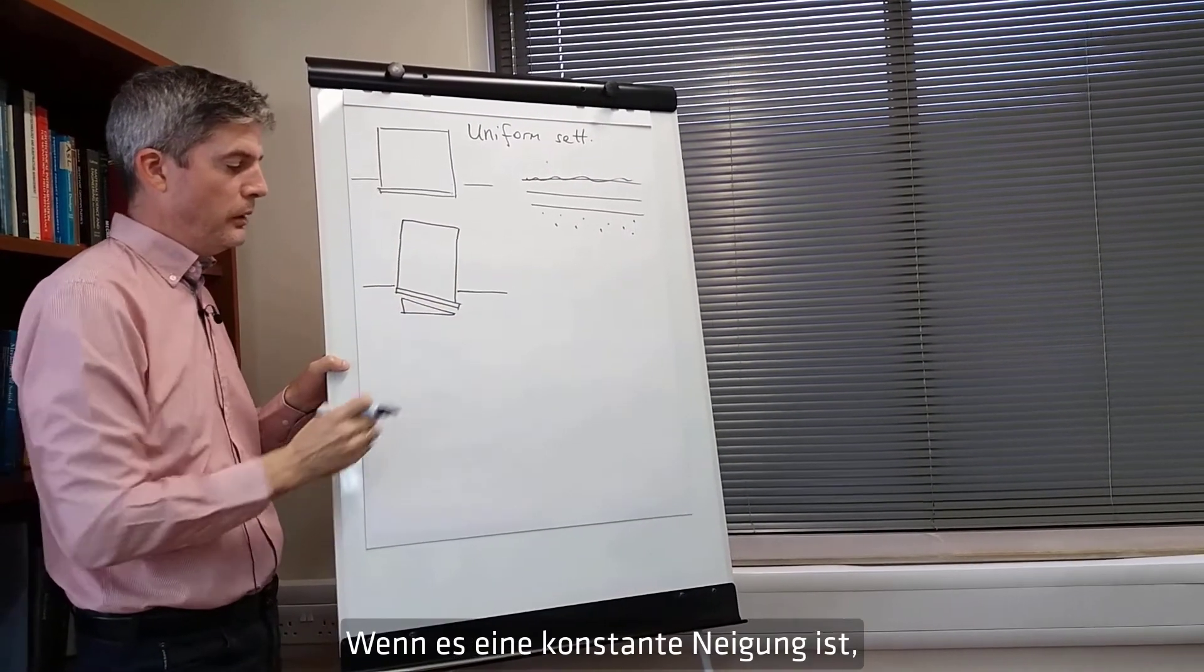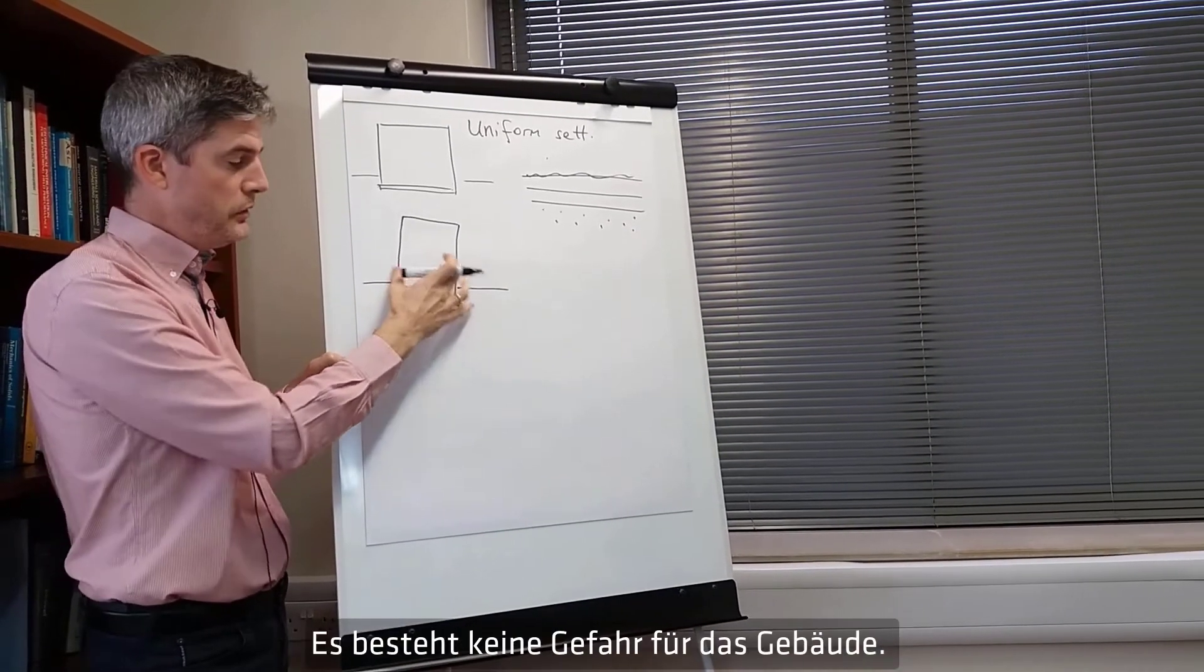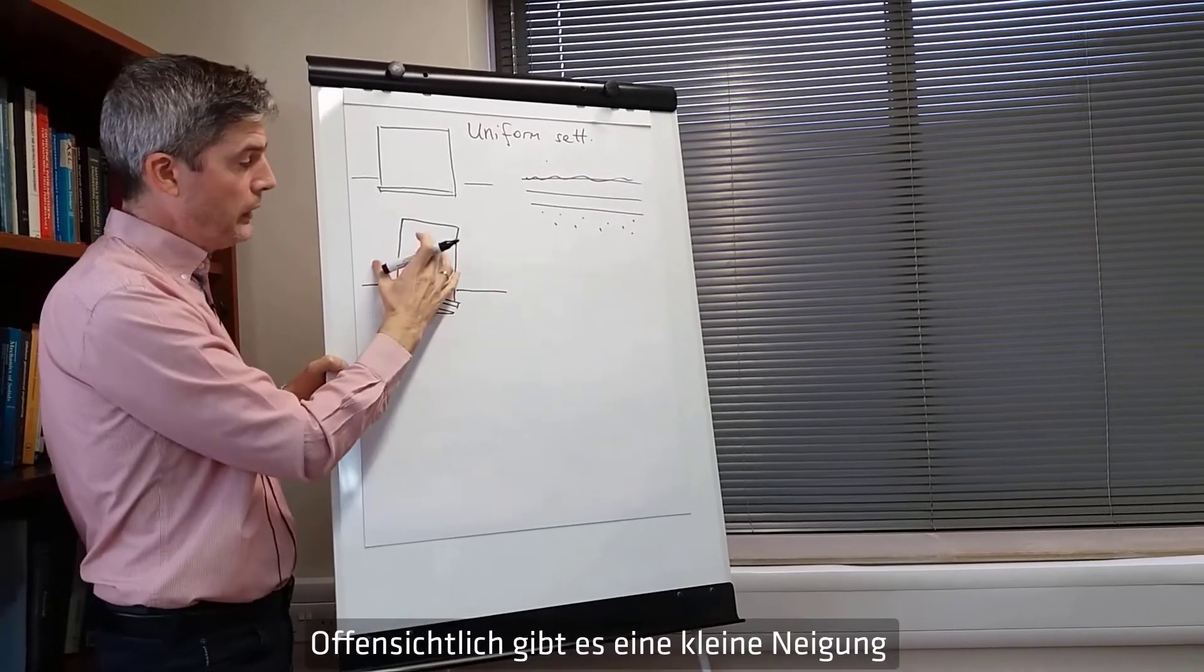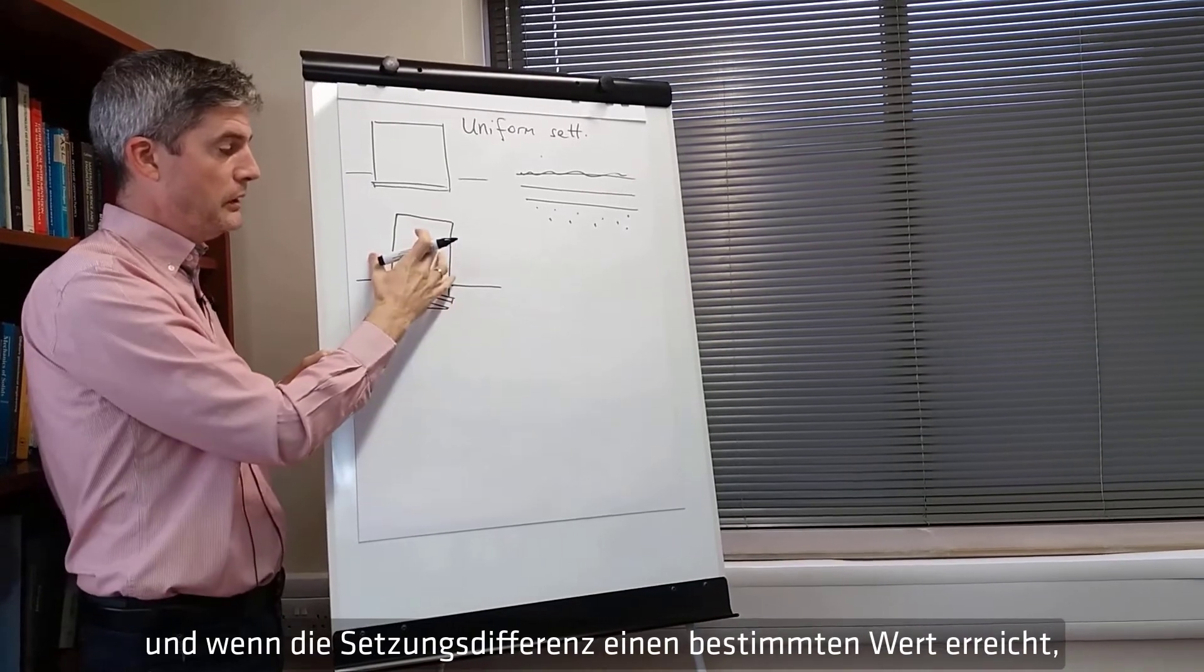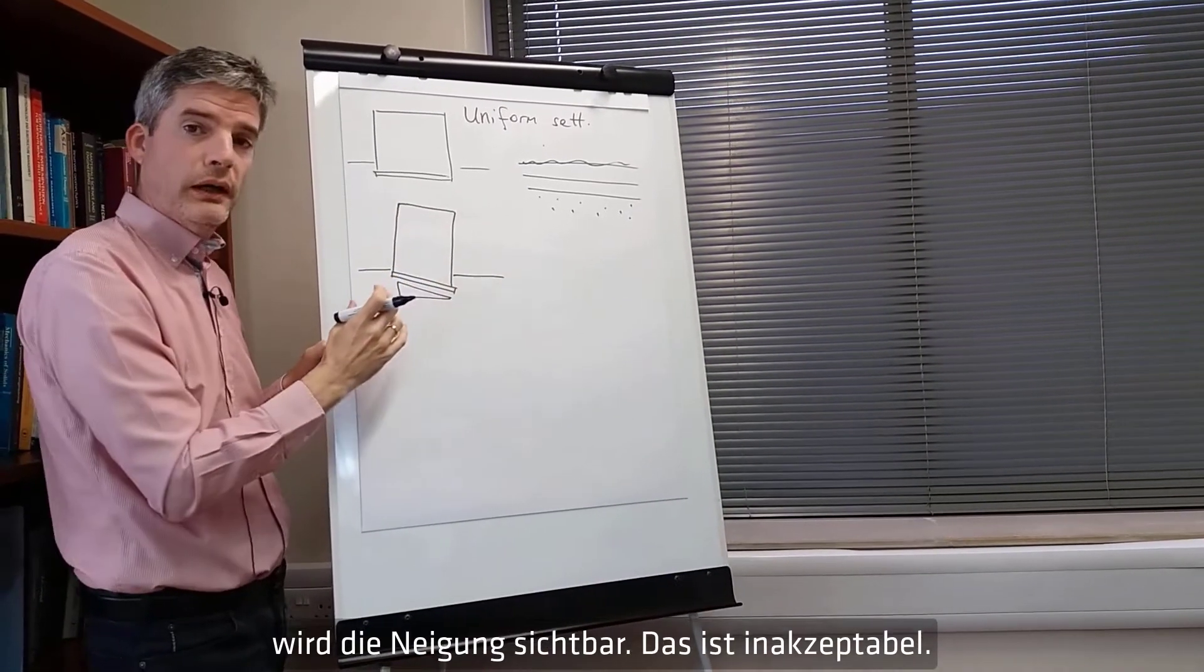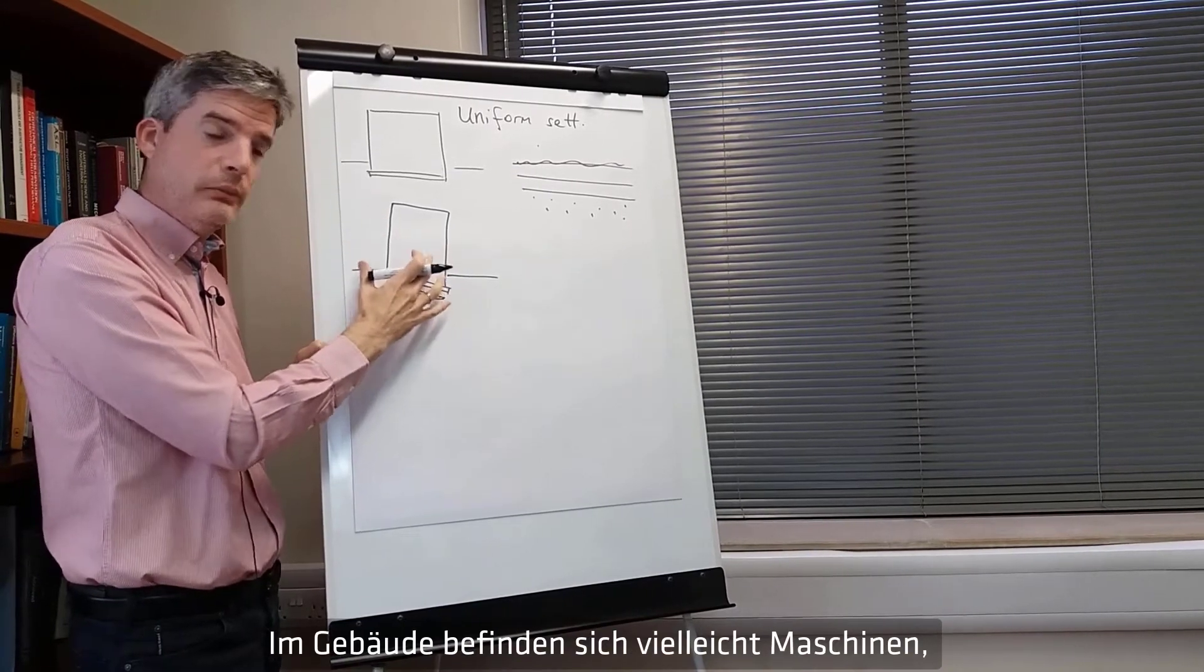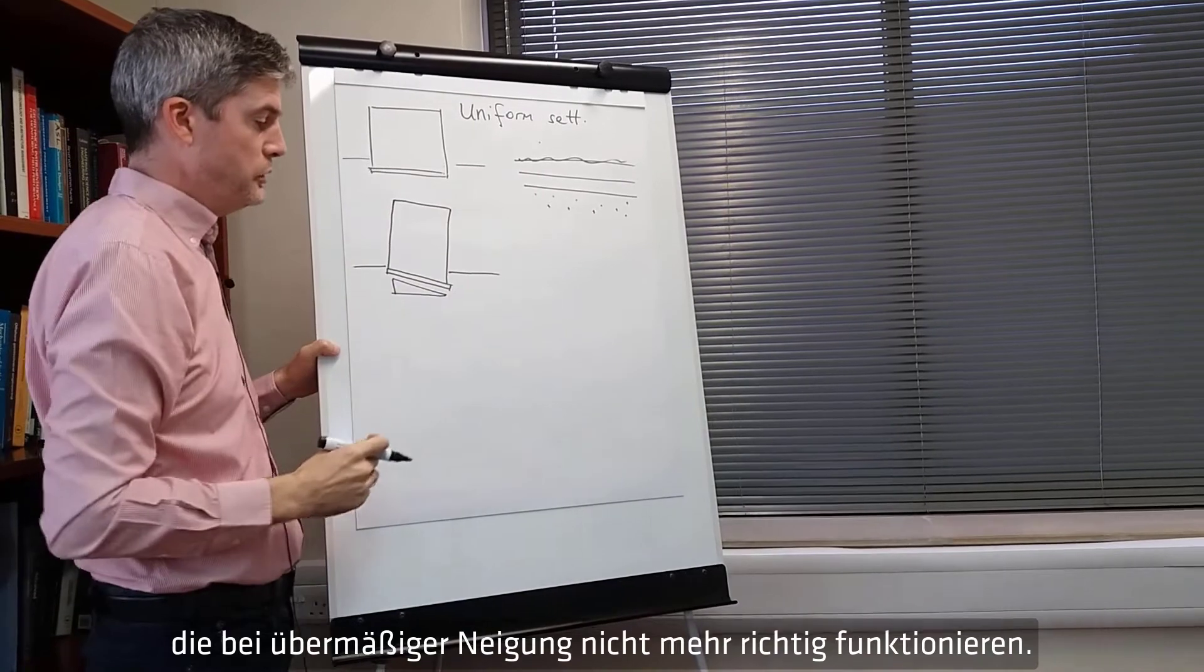But if it is a constant slope that will not directly cause damage to the building because there's no distress being felt by the building. Clearly there is some tilt. So when the differential settlement gets to a certain level the tilt will be visible and that will be unacceptable. And there may be some machinery within the building that does not function correctly when there is too much tilt.